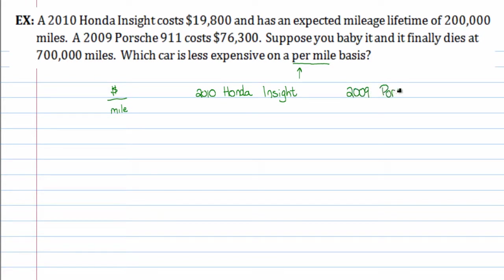I'm not going to write, well, I guess I could. Porsche 911. Well, it's much more of a stylish car, but it's also very expensive for repairs and whatnot. So the 2010 Honda Insight is $19,800, and for that price, you'll get 200,000 miles.